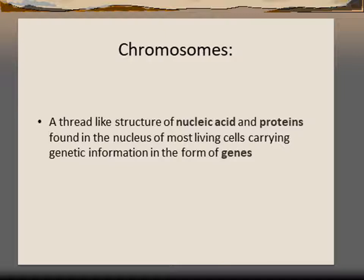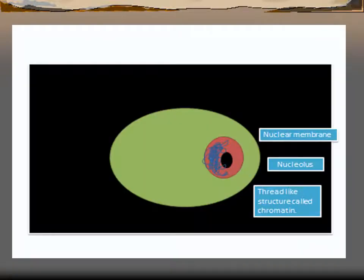Next is chromosome. We have discussed this in earlier chapters. The chromosome is a thread-like structure of nucleic acid and protein, which stores genetic information in the form of genes. Chromosomes are carriers of genes. In this diagram, you can see that inside the nuclear membrane, the dense thread-like structure is called chromatin, and chromatin is converted to chromosomes.